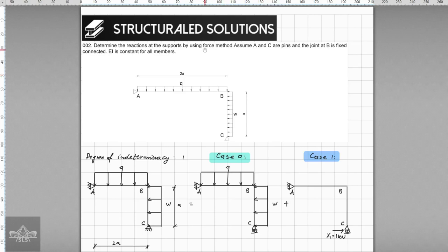It's given that support at point A and point C are pins, and at point B it's a fixed joint. Also, the flexural rigidity EI is constant for both members AB and BC.